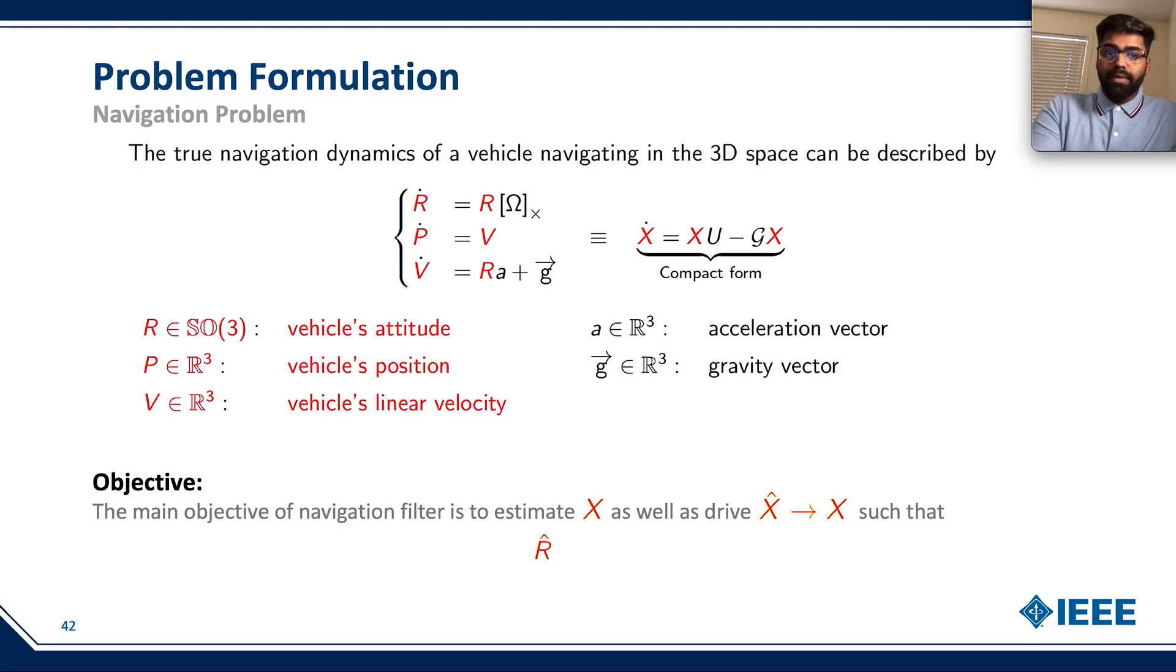Our objective in this work is to estimate X by X hat. And we want X hat to be very close to our true value of our navigation matrix, which is X. Inside the estimate of our X hat, we also have our R hat, P hat, and V hat.